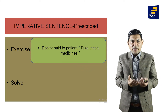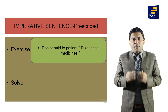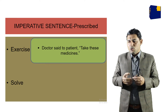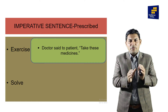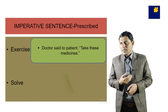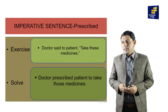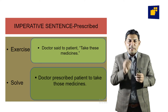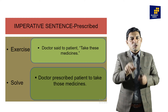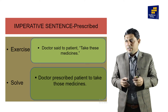Number five is the prescribed sense. Example: 'Doctor said to patient, take these medicines.' Most people use 'advised' or 'suggested,' which is acceptable. But the more accurate and professional word is 'prescribed,' because when a doctor gives a suggestion, it is known as a prescription. So: 'Doctor prescribed patient to take those medicines.' In place of 'prescribed,' 'advised' or 'suggested' can also be used, but 'prescribed' is more proper.